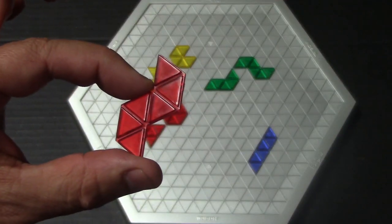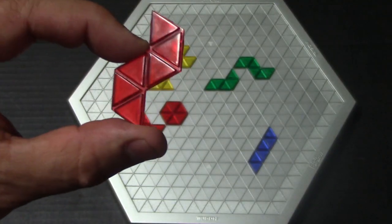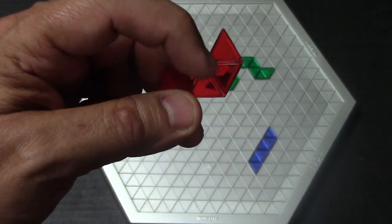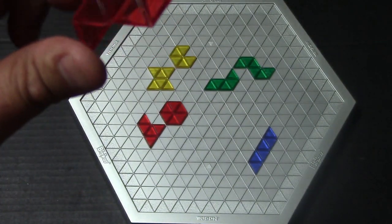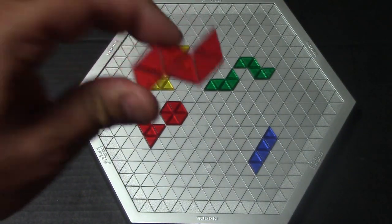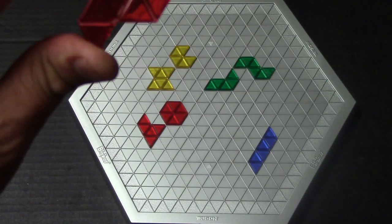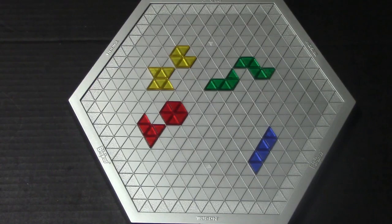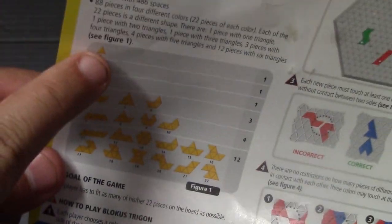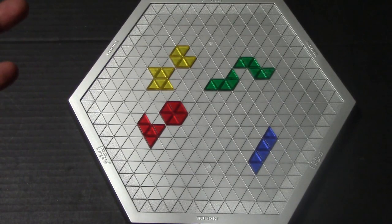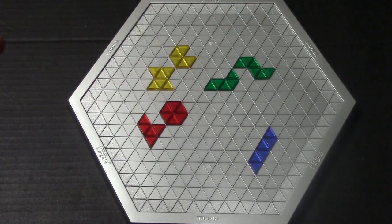Each player counts the number of unit triangles they have left. Each of these triangles is worth negative one point. If a player has managed to put all of their pieces on the board, they get a bonus 15 points and an additional five bonus points if the very last piece was this very small triangle. After that, you tally up your score and whoever has the highest score wins.